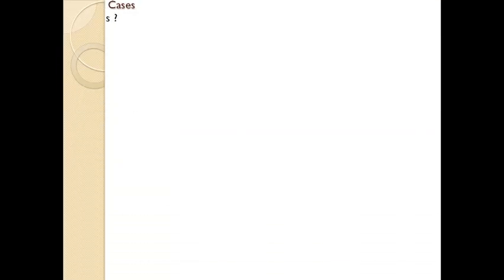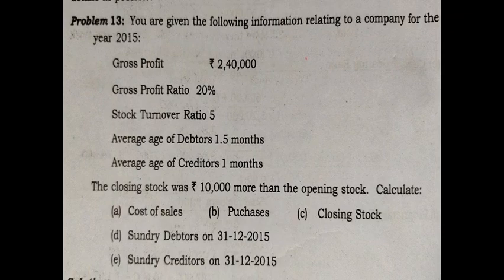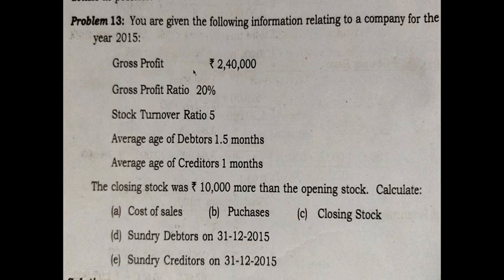First of all we need to find cost of sales. In order to find cost of sales there are two equations: one is sales minus gross profit; another is opening stock plus purchases plus direct expenses minus closing stock. Since in the question details regarding gross profit are already given, and gross profit ratio is 20% of sales — which we have discussed before — we can easily find sales.